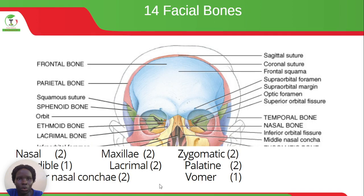When we talk about the facial bones, those are the ones already mentioned. We have two nasal bones, two maxillae, two zygomatics, one mandible, two lacrimals, two palatines, two inferior nasal conchae, and one vomer.